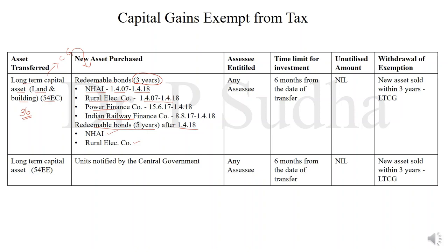If a long-term land and building is sold and any of these bonds are purchased, then the capital gain will be exempted. Any assessee can claim this deduction. The time limit is 6 months — from the date of sale, within 6 months the new asset should be purchased. There is no capital gain account scheme here, and if the asset is sold within 3 years, the exemption will be withdrawn and the capital gain will be treated as long-term capital gain.